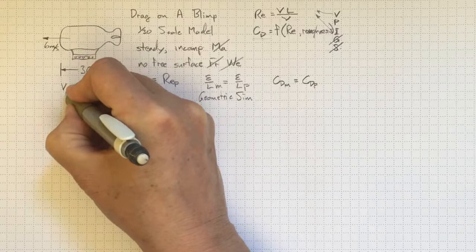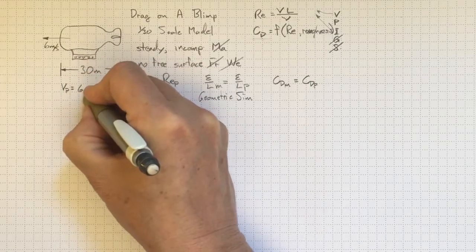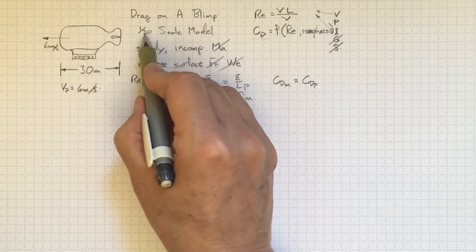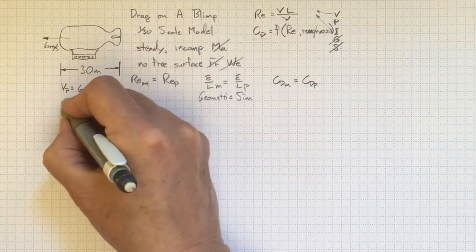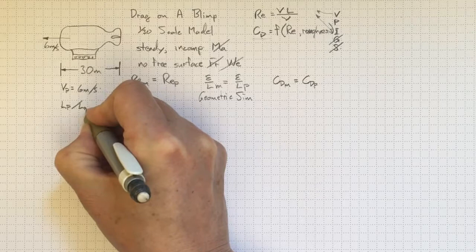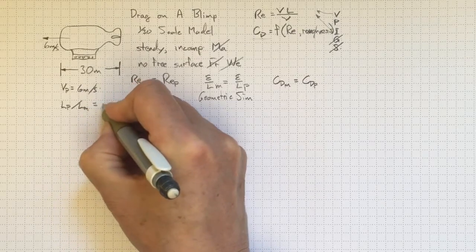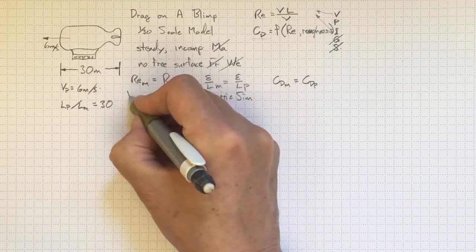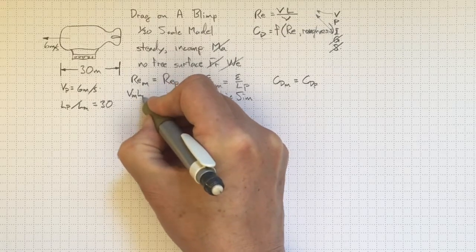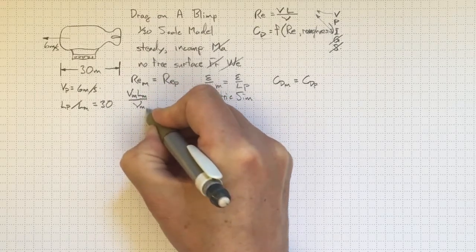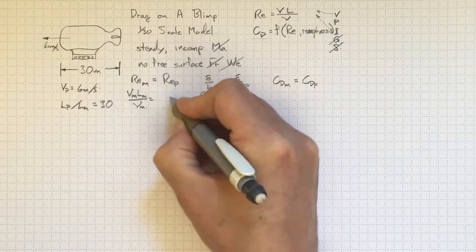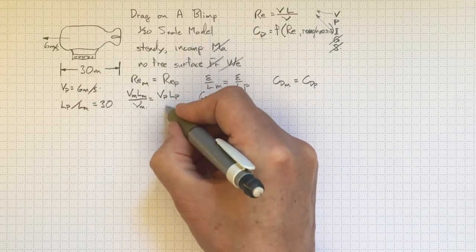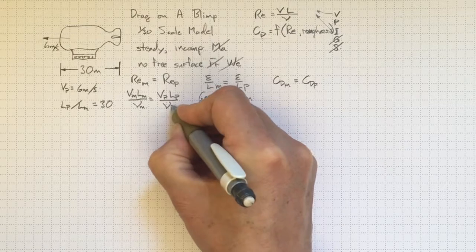So let's look at our prototype. The velocity of the prototype is 6 meters per second. The length scale for the prototype is 30 meters. If it's a 1:30 scale model, 1:30 the size, then the length of the prototype divided by the length of the model will be equal to 30. Now let's set up our Reynolds number similarity. The velocity for the model times the length for the model divided by the kinematic viscosity for the model must be equal to the velocity for the prototype times the length for the prototype divided by the kinematic viscosity for the prototype.